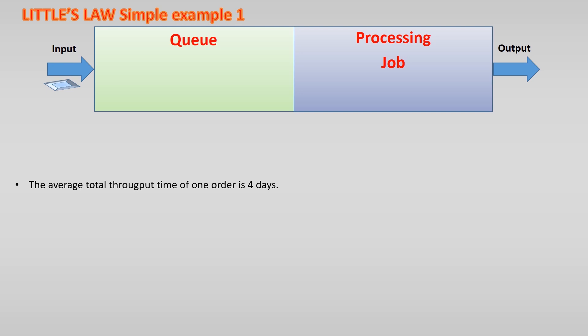Suppose we have a process with a processing job and before this job is a queue. One order enters the process and it takes 4 days to complete the work, including some time it waits in the queue before it is processed. Every week we want to produce 20 orders, so the input and output should be 20 per week. Our company works 7 days and around the clock.